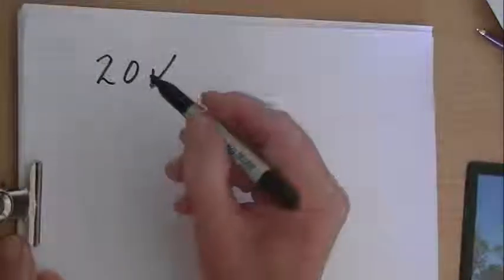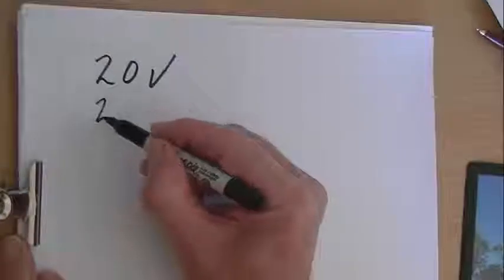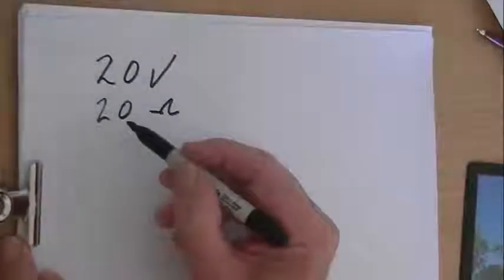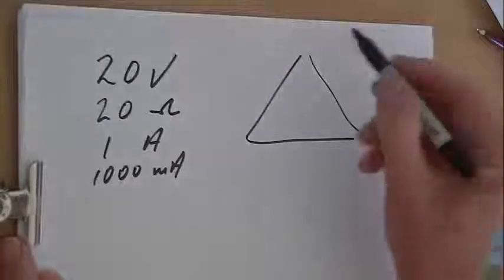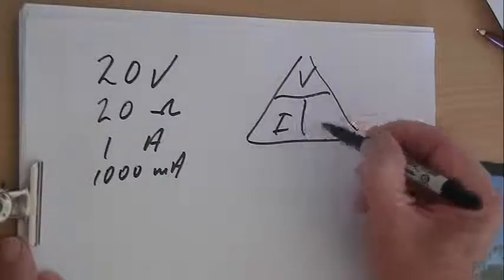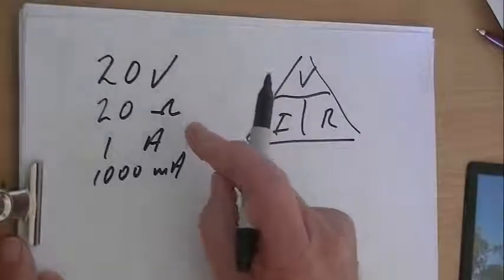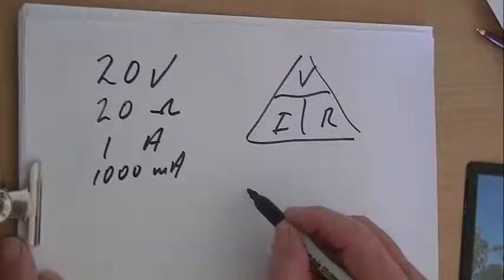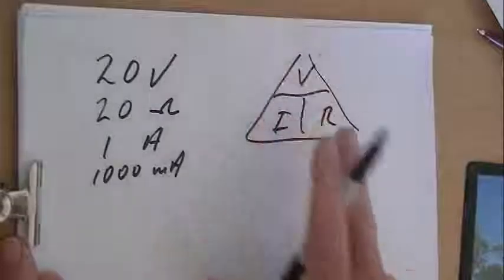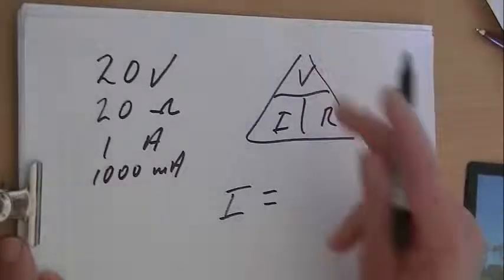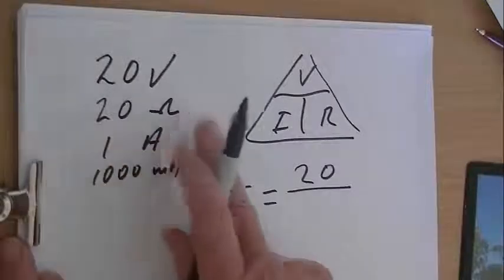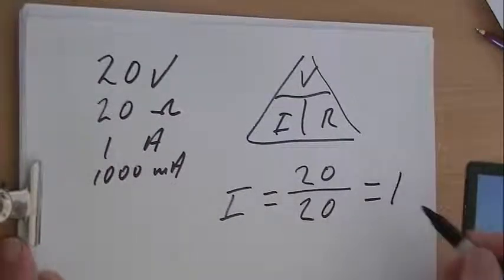Then the next one we had, we had 20 volts with a resistance of 20 ohms, and we had a current of 1 amp. You could write that if you wanted to as 1,000 milliamps. That would be a triangle, V equals IR. Now this time let's work out the current. We want to know the current, so we block our current. And I equals V over R. So I will be the voltage, which was 20, over the resistance, which was 20 ohms. That equals 1 amp.